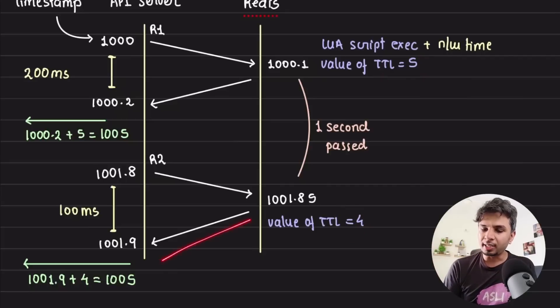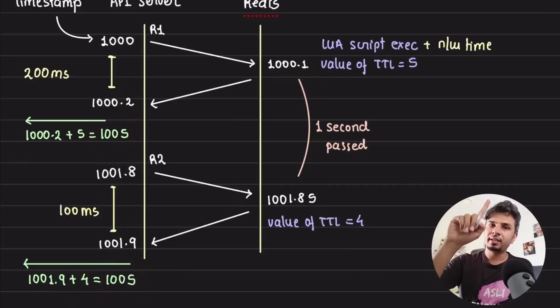Now what it would return is four. And because the total time it took was 100 milliseconds, from 1001.8 it became 1001.9. 1001.9 plus four is equal to 1005. So this is what would be set in x-rate-limit-reset header. So consistent behavior, no wobbling up until now.